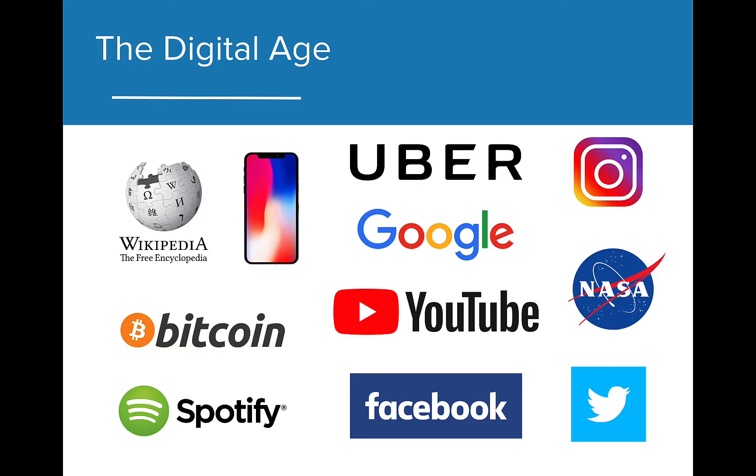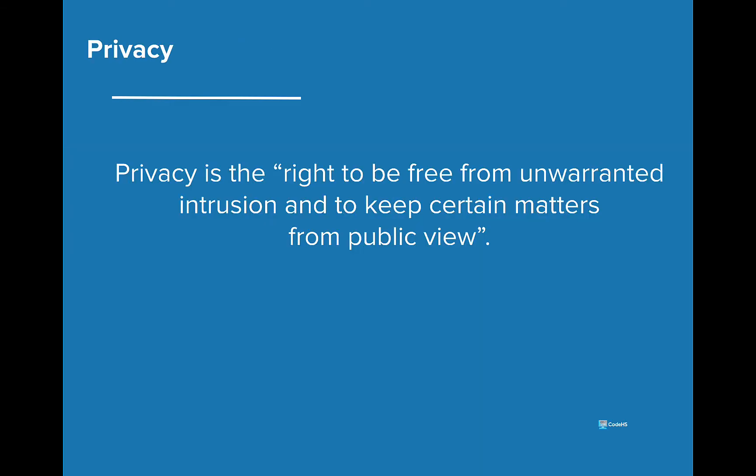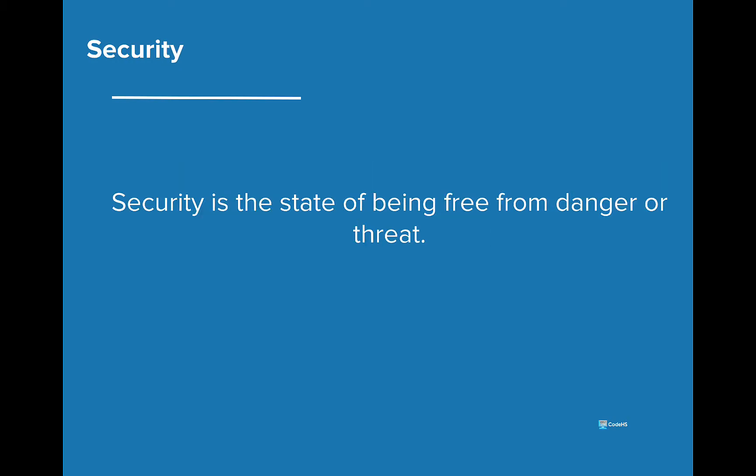Let's first get clear about what privacy and security actually are and what they mean to us. According to the Oxford Dictionary of Law, privacy is the right to be free from unwarranted intrusion and to keep certain matters from public view. Security is the state of being free from danger or threat — the warm, fuzzy feeling we have when we don't have to worry about feeling threatened by harm from others or things in the world around us.